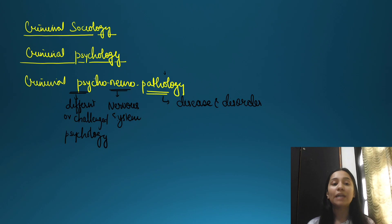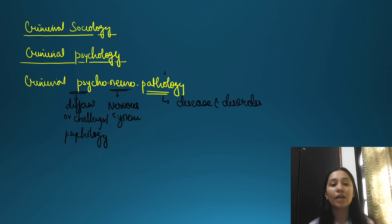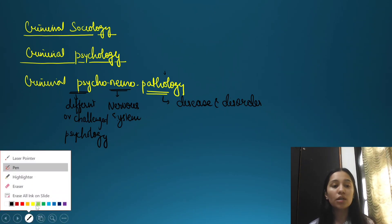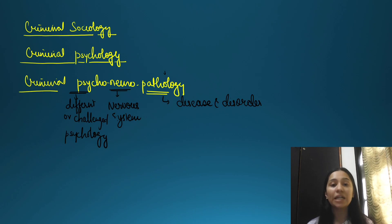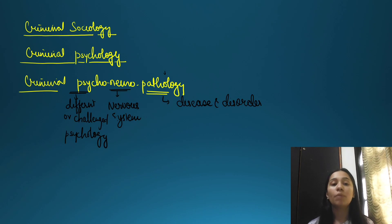If a particular psychological challenge happens to that person, this is criminal psychoneuropathology. We are talking about psychopaths, psychokillers, and serial killers — schizophrenia is a medical and pathological condition involving a disorder where the person develops a different type of psychological way of thinking due to neural disease. That's why it is called criminal psychoneuropathology.